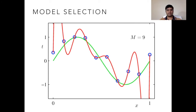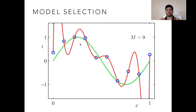Let's consider the case of overfitting. When we use a very high order polynomial, it fits exactly through all of the training points. But as you can see in the red curve, it's not a good approximation of the underlying green curve. So that means the error on the training points alone is not a good criterion for model selection. If we select the model using this criterion, we will usually end up with an overfitted model.